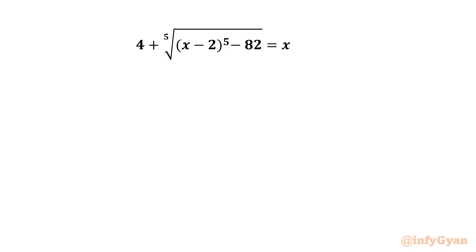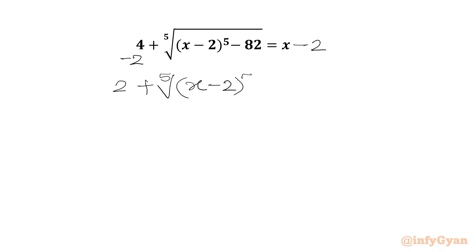I will subtract 2 from both the sides, so we will write minus 2 on the RHS also. So 4 minus 2 is 2. We will write 2 plus fifth root of (x minus 2) whole power 5, minus 2, minus 82, equal to x minus 2.